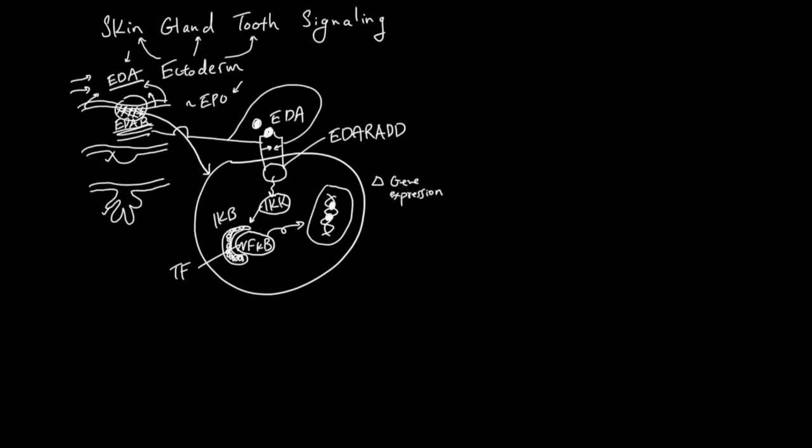So in summary, EDA ligand is secreted by many cell types, mostly ectoderms. They go to many places, but other ectoderms with special receptor called EDAR can bind to EDA and send the signal intracellularly with the help of EDAR adapter. This signal leads to activation of IKK, which is going to act on IKB. And IKB releases NF-kappa-B.